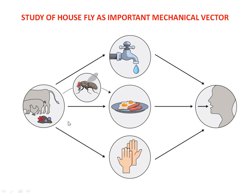They usually carry the pathogens from their body parts. Once they sit on our food, these disease-causing agents enter into the food naturally. So when we feed on that particular food, the pathogen enters into our body. We need to practice washing hands very frequently before eating food. Whenever the fly sits on water, it contaminates the water with the disease-causing agent, and when that contaminated water is consumed, the disease is also transmitted. In this way, the housefly acts as a mechanical vector.